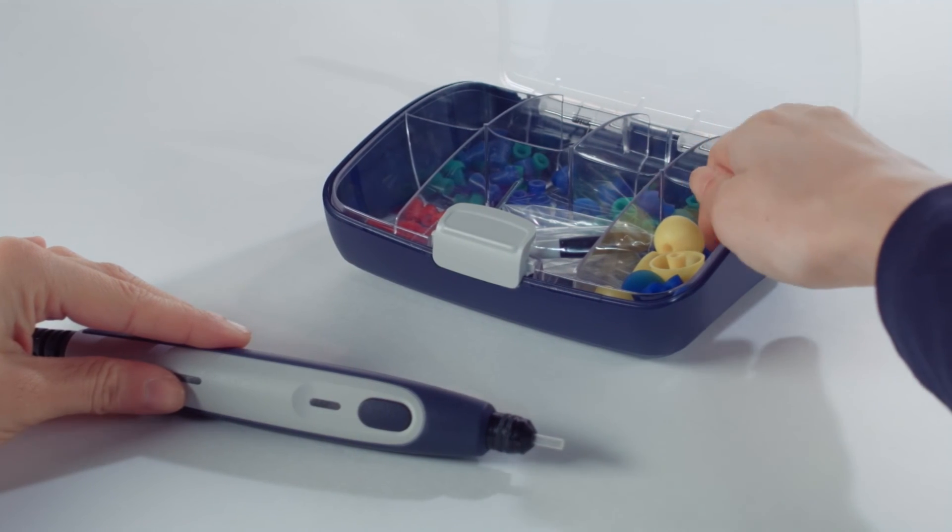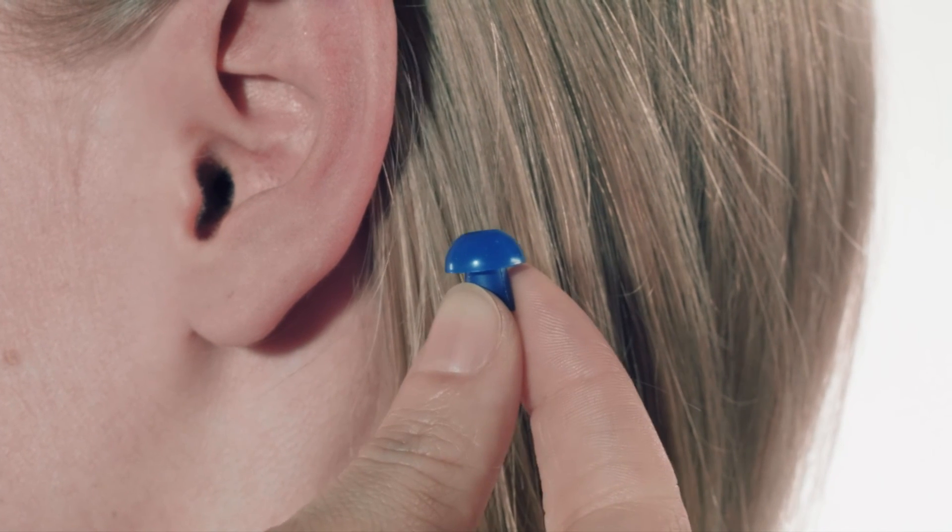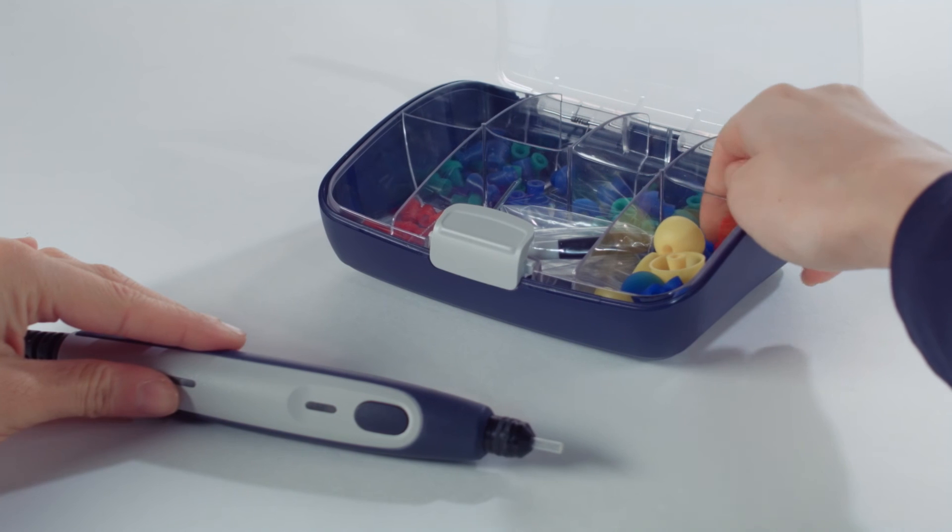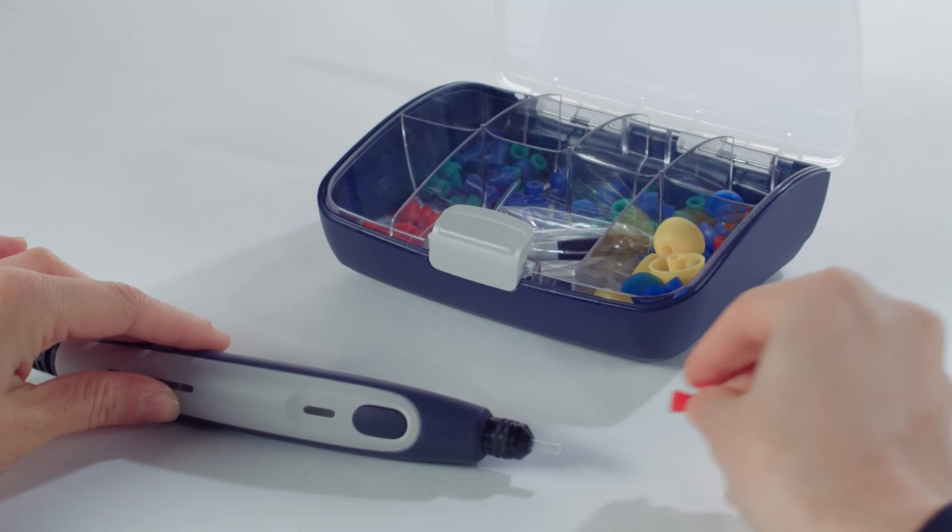To select the appropriate size of the ear tip, gently pull the ear up and back to straighten the ear canal. The ear tip should cover the entire ear canal opening but not be too big or too small.